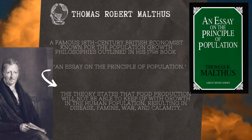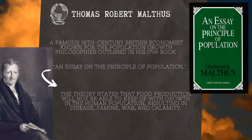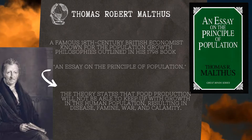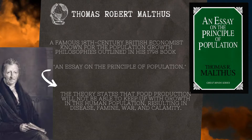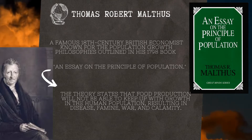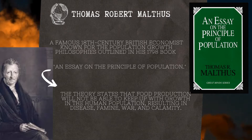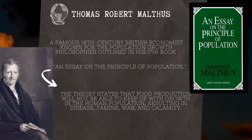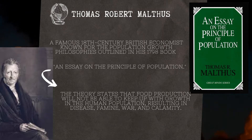The Malthusian theory of population is a theory published by an English cleric and scholar Thomas Robert Malthus. He published this in his 1798 writings, an essay on the principle of population. The Malthusian theory of population is a theory of exponential population and arithmetic food supply growth. Malthus believed that the population would be controlled through preventative and natural checks, in order to balance the food supply with the population level. These checks would result in the Malthusian catastrophe.